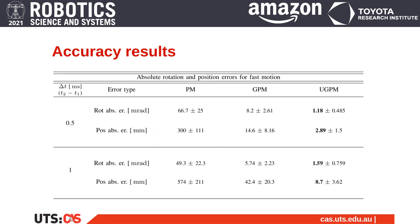Our paper contains extensive experiments and comparison against current state-of-the-art pre-integration methods. In this slide, we have an extract of the accuracy experiment for integration windows of 0.5 and 1 second. Our novel method outperforms the current state-of-the-art by around four-fold and the standard pre-integration by more than an order of magnitude. While the use of Gaussian processes allows for accurate data-driven modeling of the system's dynamics, they suffer from cubic computational complexity.